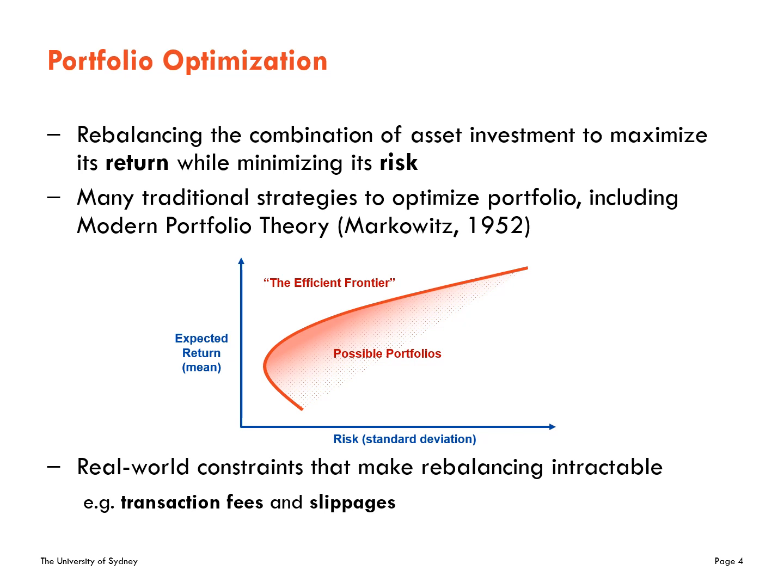Portfolio optimization means making a good combination of assets to maximize return and minimize risk. There are many traditional theories about this. According to Markowitz's theory, if we set the mean of return as expected return and its standard deviation as the risk, the optimal portfolios can be represented on the red line called the efficient frontier. However, the majority of theories do not work well in reality because of constraints like commission fees and slippage — the price difference between what we entered to buy or sell and what we actually got due to lack of liquidity.